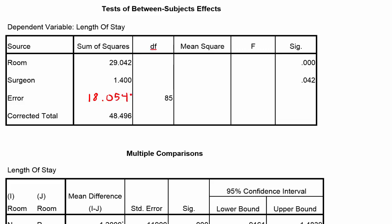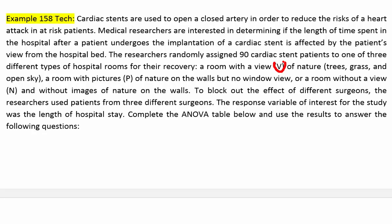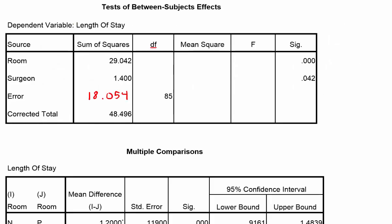Now we need to fill in the degrees of freedom. In the problem, they describe three types of rooms: a room with a view, rooms with pictures on the wall of nature, and rooms with no pictures and no view. That's three kinds of different rooms. They also tell us there were exactly three different surgeons. So we have three treatments and three blocks. That means the degrees of freedom is 3 minus 1 for each, so degrees of freedom 2 for the rooms.